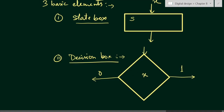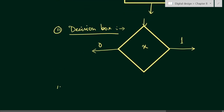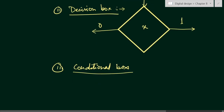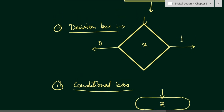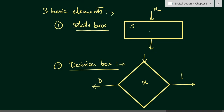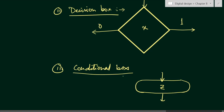The third type of box is the conditional box, which is an oval-shaped box. It will have some output Z, and its input will always come from the decision box and it will go towards the state box. So the three basic elements of an ASM chart are: the state box (rectangular), the decision box (diamond-shaped, decides control flow direction based on input), and the conditional box (oval, input from decision box, output to state box).